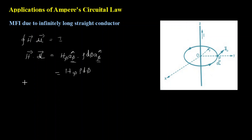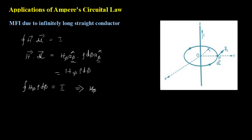Now I need the closed line integral of this. So the closed line integral of H_phi rho d-phi equals I — this is what Ampere's Circuit Law states. I do not have any computation on the RHS; it remains I. On the LHS, H_phi and rho are both constants: H_phi is constant because we are in a steady magnetic field, and the circular path radius rho remains constant since we are not going to change the circular path.